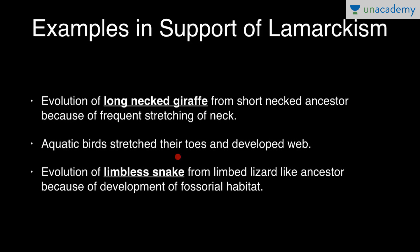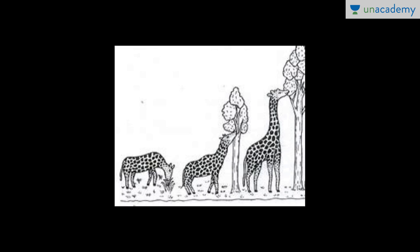Similarly, aquatic birds stretched their toes and developed webbed feet. Another example is the evolution of the limbless snake from a limbed lizard-like ancestor because of the development of a fossorial habitat — because of their digging or burrowing habit, snakes became limbless. This picture depicts the giraffe example: first it was short-necked, then they had to stretch their necks to reach leaves on tall plants, and in this process they evolved long necks.